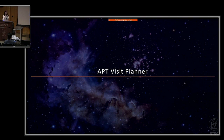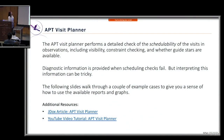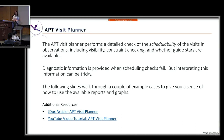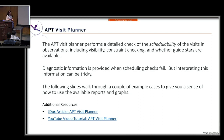The APT visit planner performs a detailed check of the schedulability of visits in your observations, including visibility, constraint checking, and guide star availability. When a schedulability check fails, there are diagnostics — though these can be tricky to interpret. In some cases, you can use reports and graphics within the visit planner to resolve what the diagnostic means.